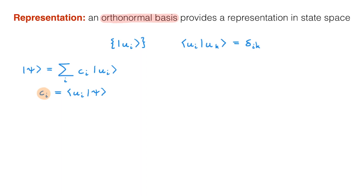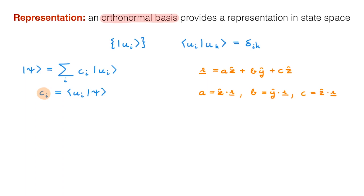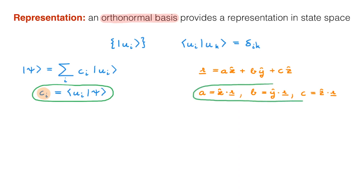As we also discussed in the video on representations, what we're doing here is analogous to what we do when we work with the familiar Euclidean 3D vectors. We typically consider an abstract vector r, but when we want to do calculations we have to write it down in terms of a basis, for example in terms of the Cartesian x, y, z basis vectors. The expansion coefficients are given by the scalar products between the basis vectors and the vector r. Bases work in an analogous manner in both vector spaces: the c coefficients are given by the scalar product between the basis kets u and the state psi of the system, and the expansion coefficients of a Euclidean 3D vector are also given by the corresponding scalar products.